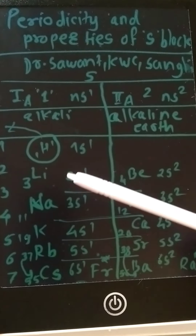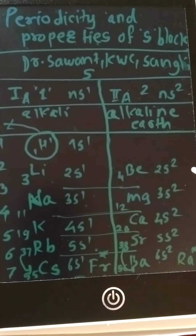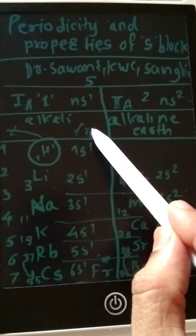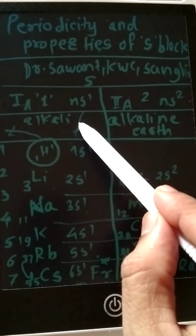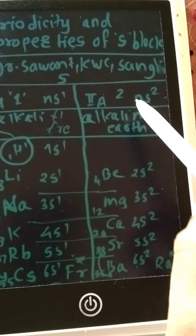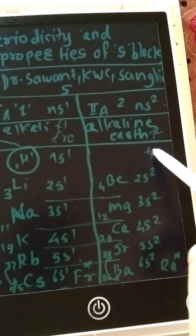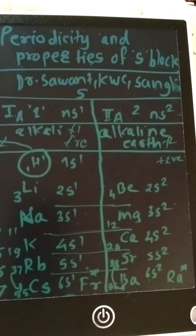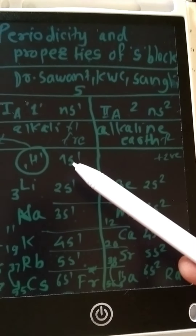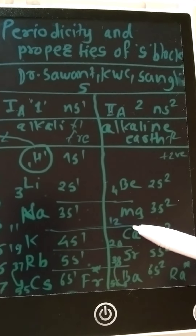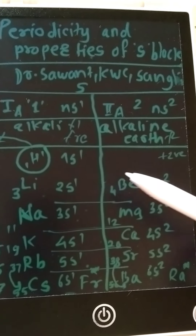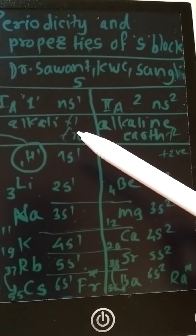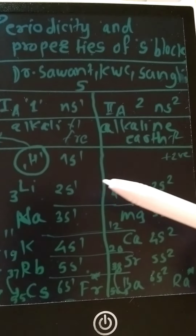These are reducing metals from Group 1 and Group 2 — all are reducing, meaning they contain one or two electrons that can be released. Alkali metals show an oxidation state of +1, and alkaline earth metals show an oxidation state of +2. Alkali metals form monovalent cations and alkaline earth metals form divalent cations.